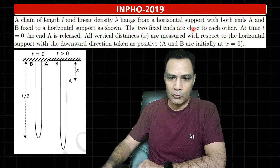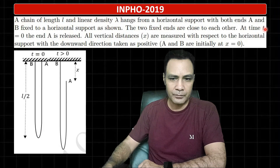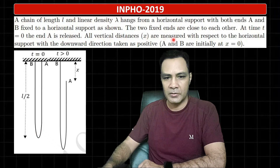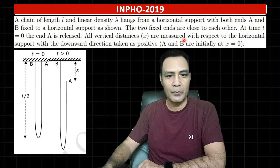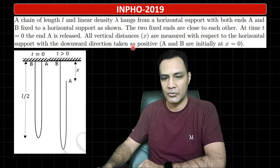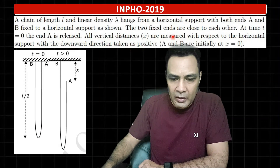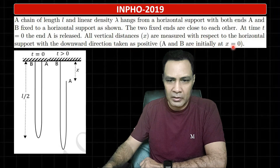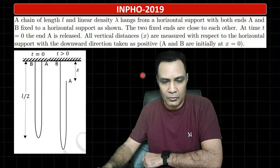The two fixed ends are close to each other. At time t equals 0, end A is released. All vertical distances x are measured with respect to the horizontal support, with the downward direction taken as positive. A and B are initially at x equal to 0.